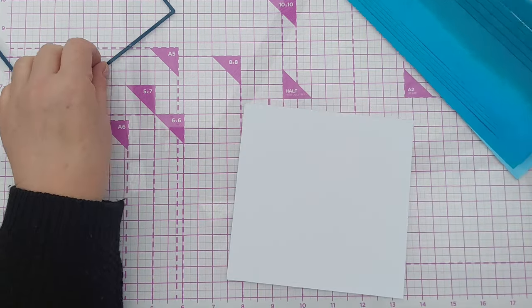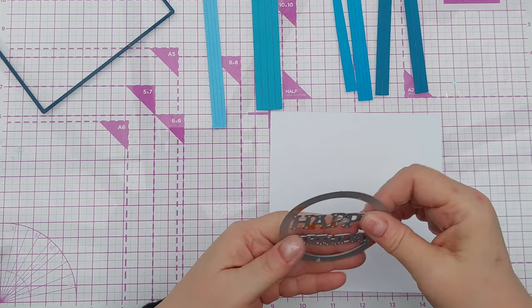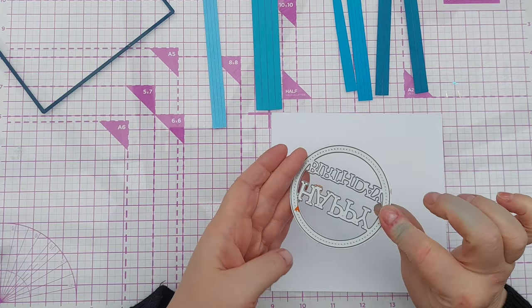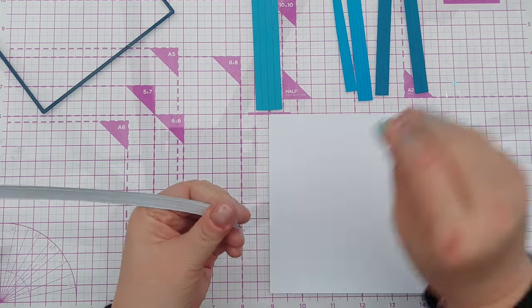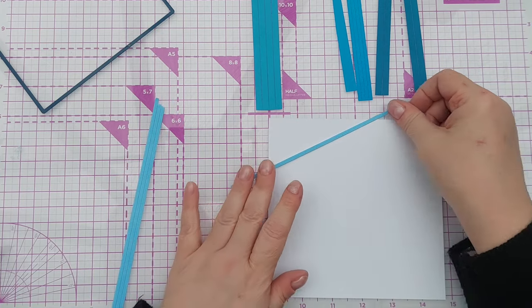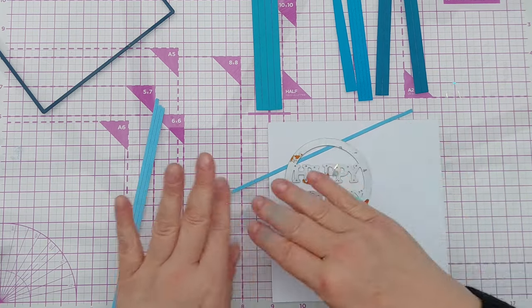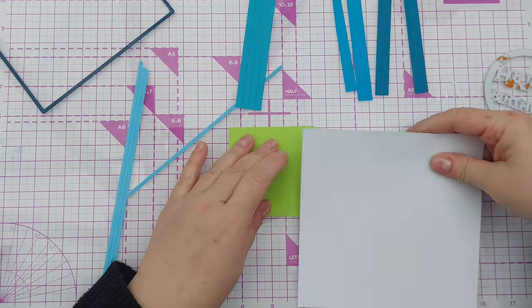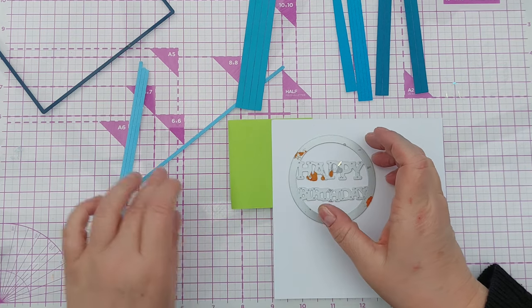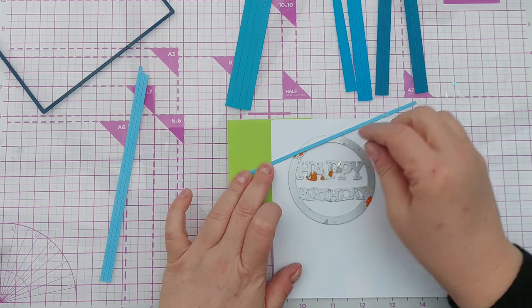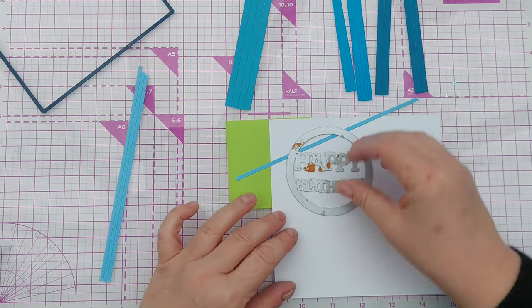Before I cut with the large square die, I'm going to take my strips and arrange them on my card panel. I'm eventually going to cut out this happy birthday circle sentiment die from this panel. I want to position that on there so it cuts through the strips. To hold everything in place, I'm going to put this sticky note here roughly where I'm going to cut it out.